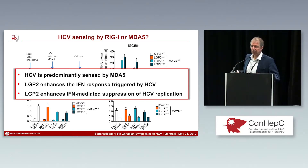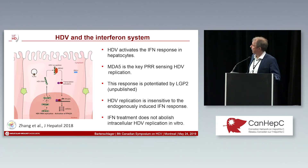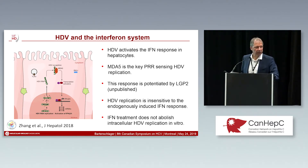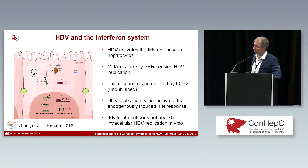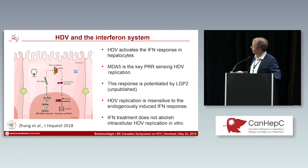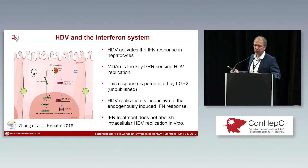For time reasons I cannot show the antiviral data, but this interferon response very much suppresses HCV replication. I would also like to mention that HCV is not the only hepatitis virus sensed in this way — in collaboration with Stefan Urban within our Transregio, we could show that hepatitis D virus, which is a satellite of HBV, is also sensed by MDA5. In fact, HDV like HCV is a very potent inducer of the interferon response, and this response is predominantly sensed by MDA5 and also very much potentiated by LGP2, following a pretty similar pathway as we have seen for HCV.